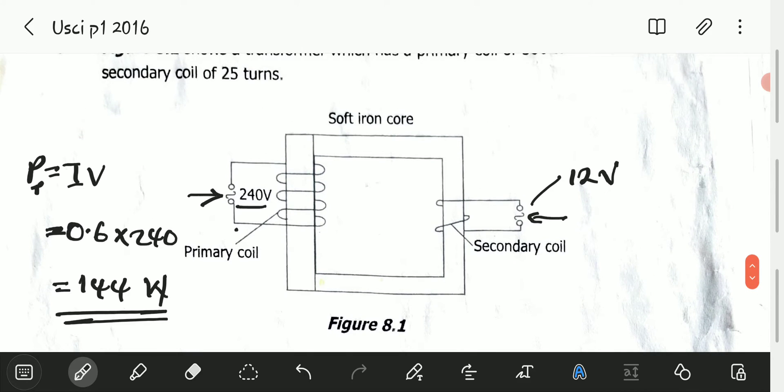Then we go to the secondary. Again, power equals current times voltage, which equals 8 multiplied by 12, which is the voltage.